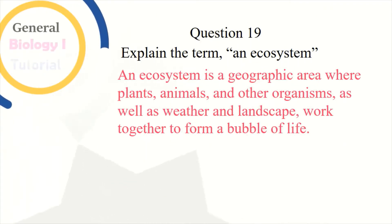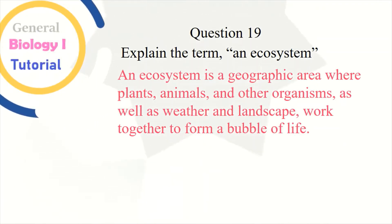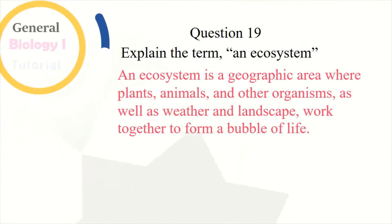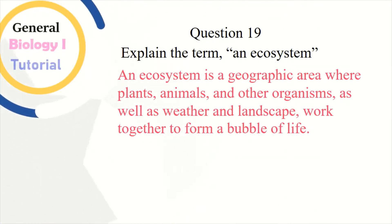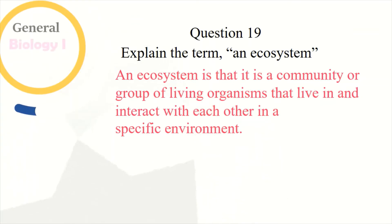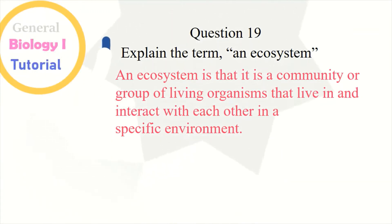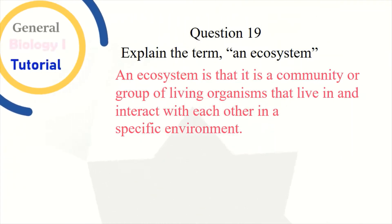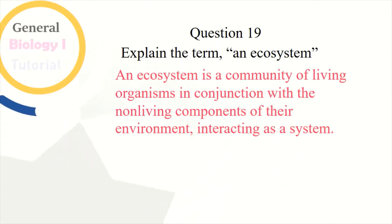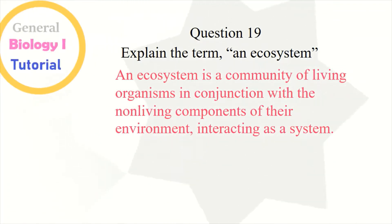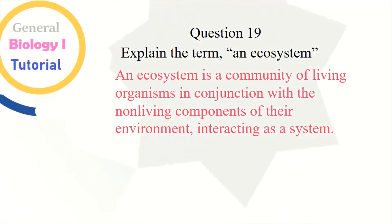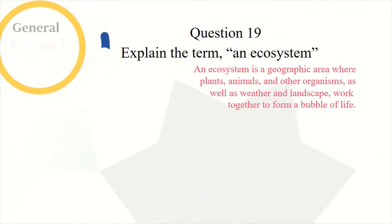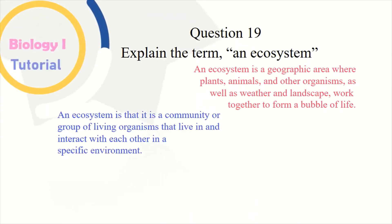Question 19: Explain the term ecosystem. An ecosystem is a geographic area where plants, animals, and other organisms, as well as weather and landscape, work together to form a bubble of life. It is also a community or group of living organisms that live in and interact with each other in a specific environment. An ecosystem is a community of living organisms in conjunction with the non-living components of their environment, interacting as a system.